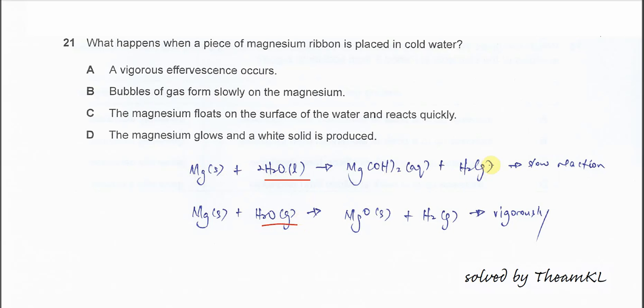It will form H2 slowly. But when we use steam to react with magnesium, because it's hot and has more energy, it reacts vigorously with the steam and forms magnesium oxide and H2 gas. These are the differences.